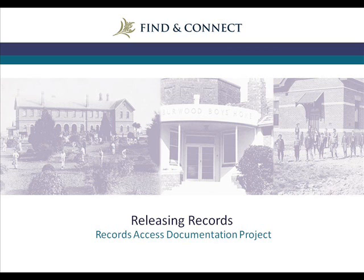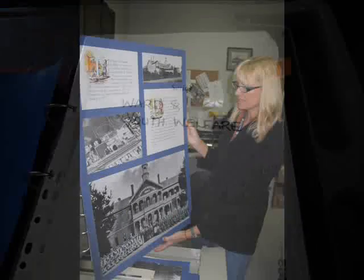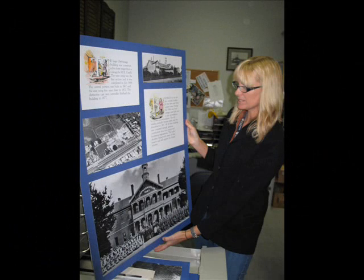Firstly, the what. Records which are released are often from a number of sources and have been created for a range of purposes. As such, there is a need to explain the record at the time of release. This explanation includes the story of the record — how and why the record was created and who created it — as well as the story in the record: the context in which the record was created, what its contents might mean, and its relationship to the care leaver.